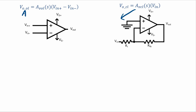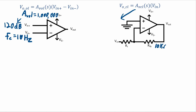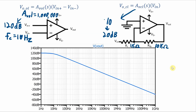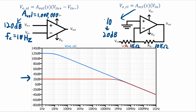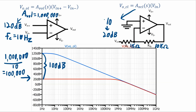Let's do a quick example comparing open-loop and closed-loop gain. In this open-loop circuit, let's say the open-loop gain is 1,000,000, which is 120 dB, and the cutoff frequency is 10 Hz — very low, as expected. For a closed-loop inverting amplifier with a feedback resistor of 10 kΩ and an input resistor of 1 kΩ, the closed-loop gain is 10, or 20 dB. Here is the open-loop frequency response: passband at 120 dB, corner frequency at 10 Hz, then a 20 dB per decade drop. Here is the closed-loop frequency response superimposed on the open-loop. The passband gain is 100 dB less than the open-loop gain, which makes sense since the closed-loop gain is a million divided by 10 — 100,000 times less.